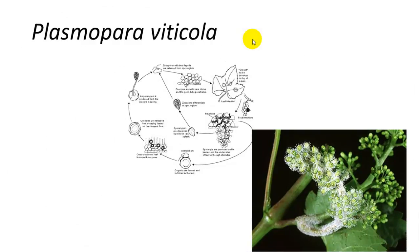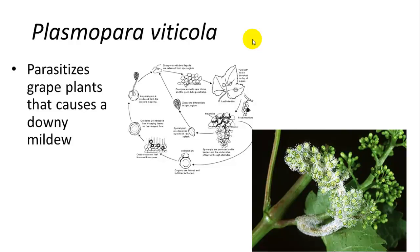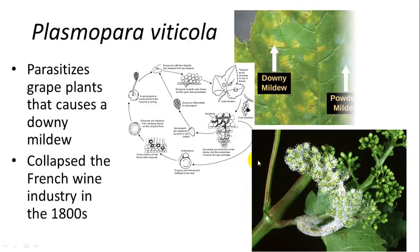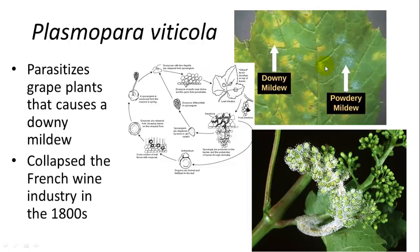A couple of protist diseases with economic importance include Plasmopara viticola, which is a grape plant parasite that causes downy mildew. Note that powdery mildew is caused by a fungus, whereas downy mildew is caused by a protist. This collapsed the French wine industry in the 1800s — they couldn't figure out how to get a defense against it.